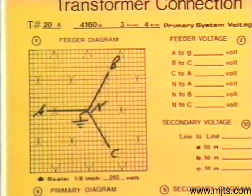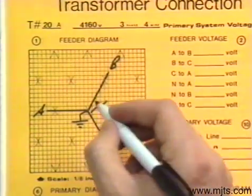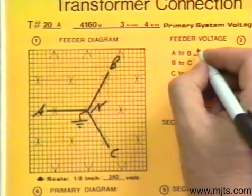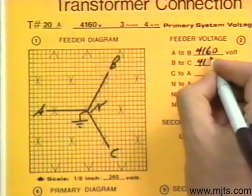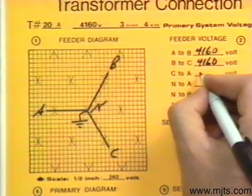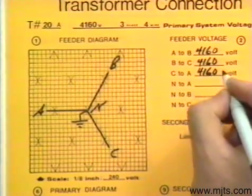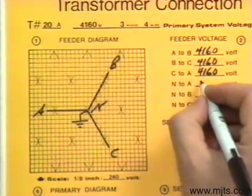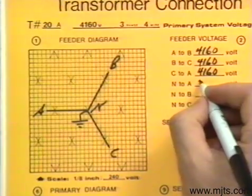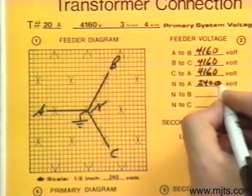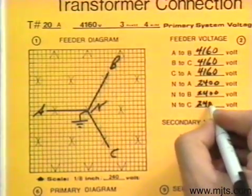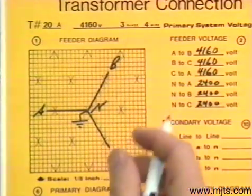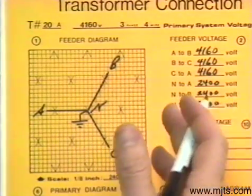Step two: label the voltages phase-to-phase. We'll have 4160 all the way around. Phase-to-neutral, all the way around we have 2400 volts. Those are the voltages available on the high side.